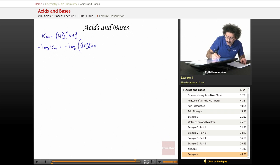Negative log of Kw is equal to negative log of this whole thing, H plus OH minus. Well, negative log of Kw equals negative log of H plus plus the negative log of OH minus. You end up with pH plus pOH.